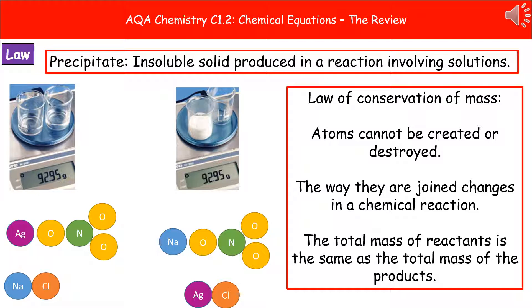And this is just demonstrating a really important principle in chemistry, which is the law of conservation of mass. And that just tells us that when we're talking about any chemical reaction at all, atoms cannot be created or destroyed. All that happens in that chemical reaction is the way they're joined together will be changed. So that means that however much we had at the beginning in terms of the mass of our reactants will always have to be the same as the total mass of the products.